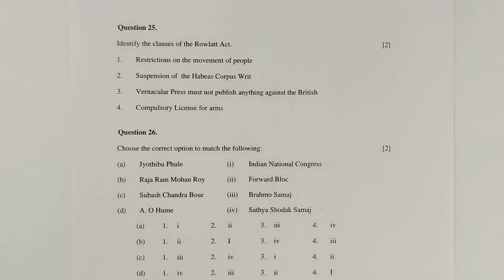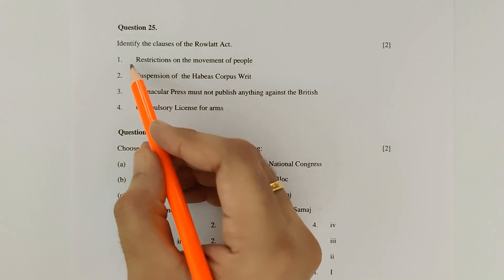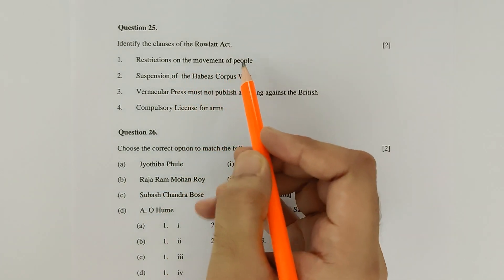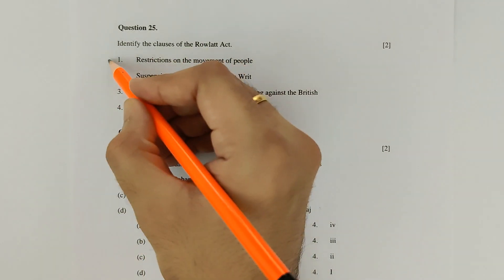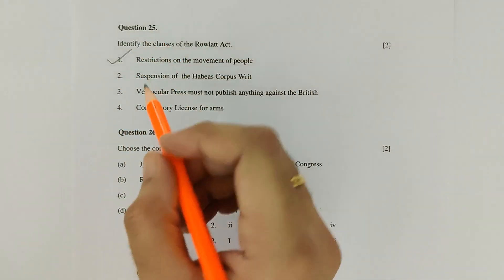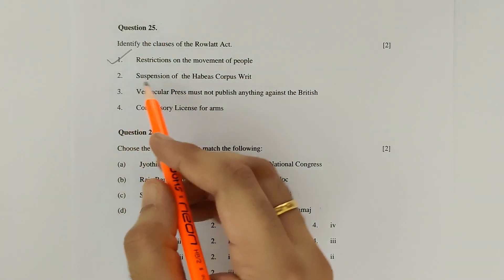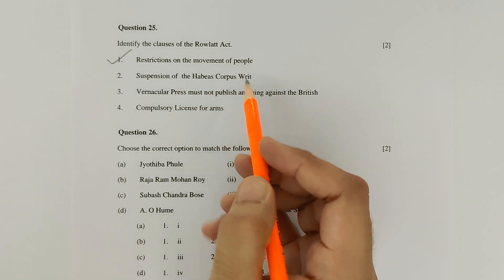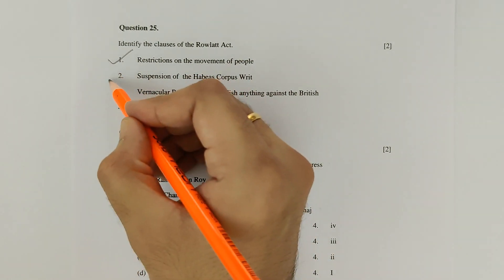Question 25: Identify the clauses of the Rowlatt Act. Number 1 — restrictions on the movement of people — is correct. Number 2 — suspension of the Habeas Corpus right — is also correct. So both options 1 and 2 are correct.